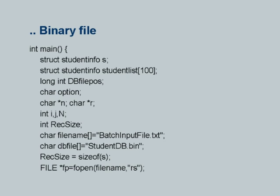I have a variable called rec_size, or record size. I define batch_input_file.txt as the name of the input file, and student_db.bin as the name of the database file I want to create. As the extension suggests, I want the input to be a text file and the output to be a binary file.